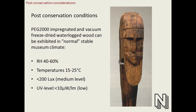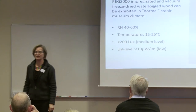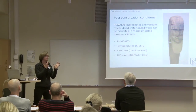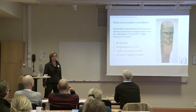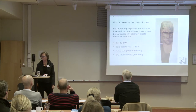After conservation, wood impregnated with PEG2000 and freeze dried can be exhibited at normal museum climate — between 40 and 60% relative humidity, temperature between 15 and 25 degrees Celsius, and a medium light level. The only critical factor is UV light, because UV can degrade the polyethylene glycol. Those are the main considerations regarding polyethylene glycol.